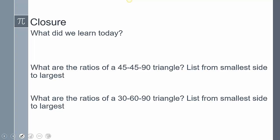So what are the ratios of a 45, 45, 90 triangle? The ratios are going to be T, T, T root 2. And then what are the ratios of a 30, 60, 90 triangle? Those are going to be T, T root 3, and 2T. This does conclude our lesson. If you have any other questions, please leave them in the comments.